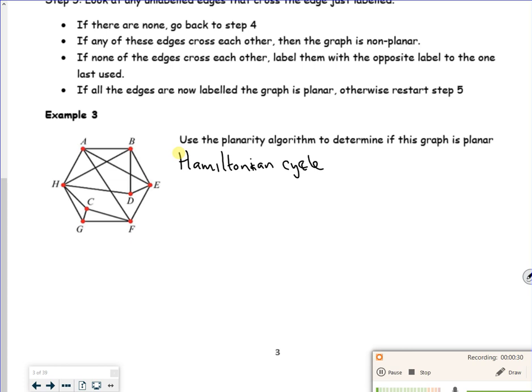So I'm just going to write that out. I went from A to B to D to E to F to G to C to H to A. And I'm going to draw it out as well. So I've got eight vertices.